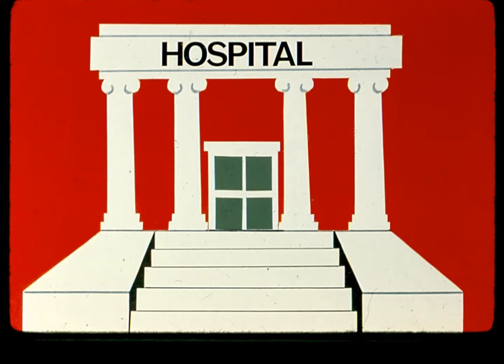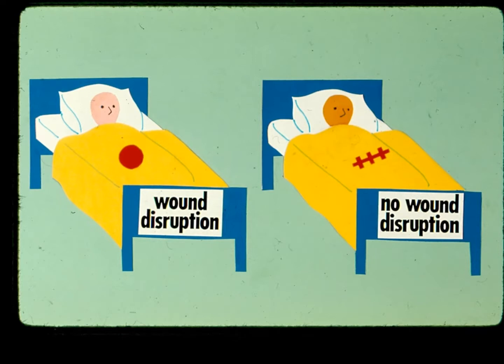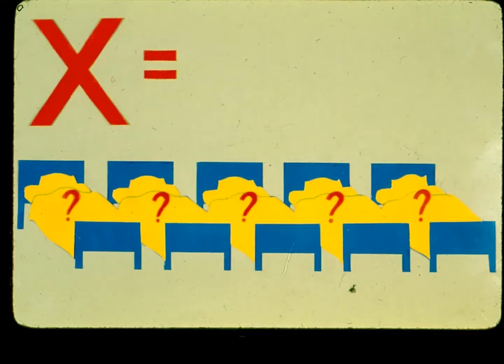The hospital setting contains several random variables of interest to the physician, health administrator, and other health researchers. One such random variable might be the number of patients undergoing surgery who experience wound disruption during recovery. If we call this variable x — the total number who have wound disruption — and we observe the next five surgical patients,